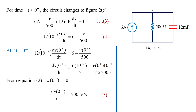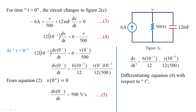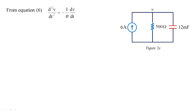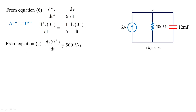Differentiating equation 4, we get d²v/dt² = −(10³/(12×500)) dv/dt = −(1/6) dv/dt, which we call equation 6. At t=0+, d²v/dt²(0+) = −(1/6) × dv/dt(0+) = −(1/6) × 500 = −83.33 volts per second squared.